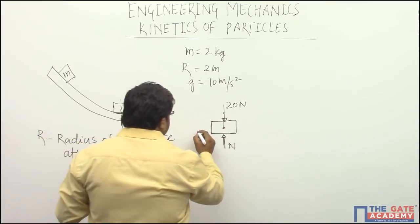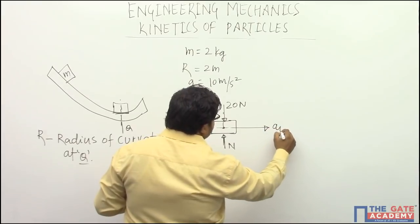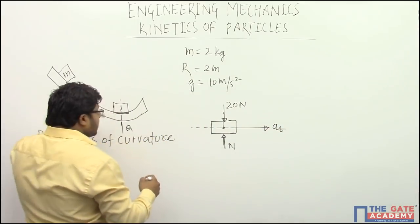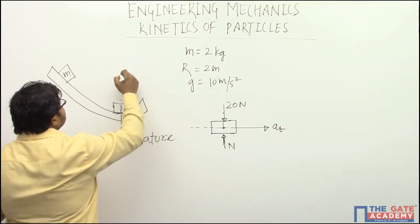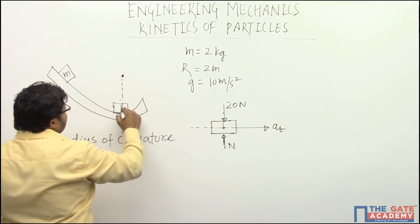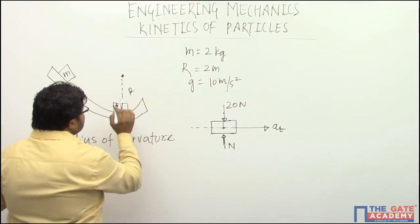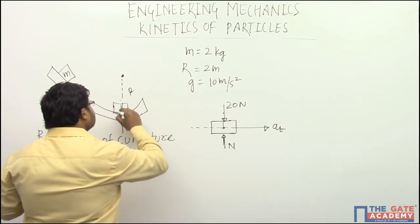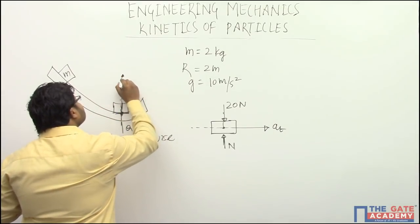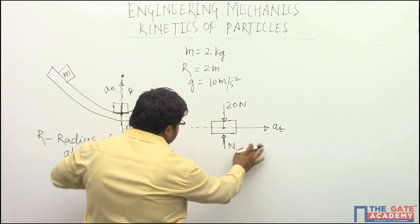One is tangential component of acceleration and other is normal component of acceleration. Tangential component of acceleration will be in the direction of tangent like this. But normal component, if this is your center of curvature and this is your r radius of curvature, then definitely normal component of acceleration will always act in a direction toward the center. So now this is your force diagram.